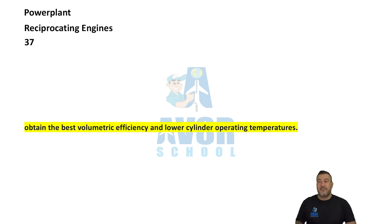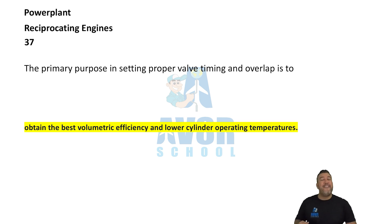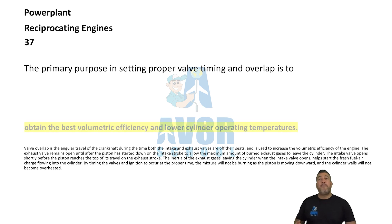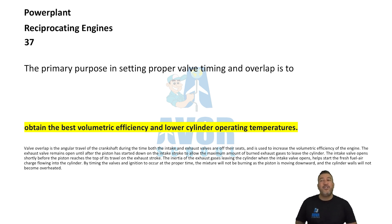Number 37. The primary purpose in setting proper valve timing and overlap is to obtain the best volumetric efficiency and lower cylinder operating temperatures.